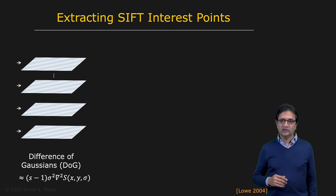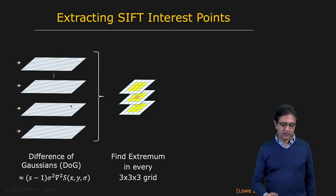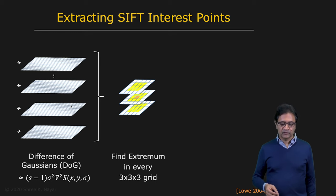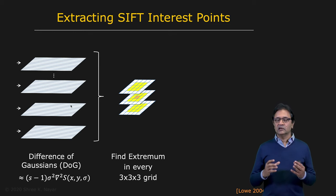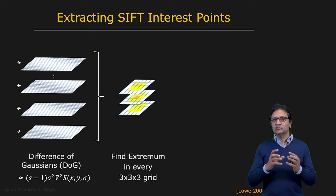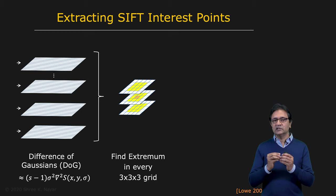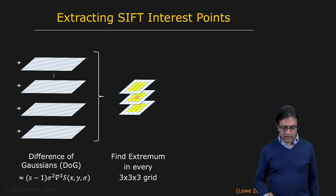This stack corresponds to the normalized Laplacian of Gaussian of the image computed at many different scales. So now we need to find extrema in the stack of images. We do that by using a small window — a three by three by three window, a cube — and moving this grid around. At each point, you ask: is this an extremum? Is this the largest value in the window, and is it substantially larger than all the neighbors? If it is, you can declare it as an extremum.